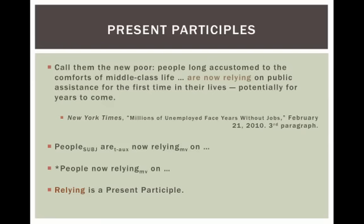The first kind we're going to look at are present participles — they're very simple to identify because they end in -ing. Here's another example: 'Call them the new poor' — that's a command, by the way, no subject. 'People long accustomed to the comforts of middle class life are now relying on public assistance for the first time in their lives, potentially for years to come.' Here 'people' is the subject, 'are' is the tense auxiliary, 'now' is an adverb we can ignore, and 'relying' is the main verb. Without 'are,' you'd just have 'People now relying on blah' — not a good sentence. So 'relying' is a present participle functioning as part of a verb phrase in a clause.